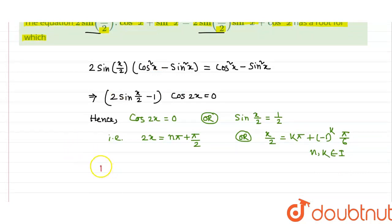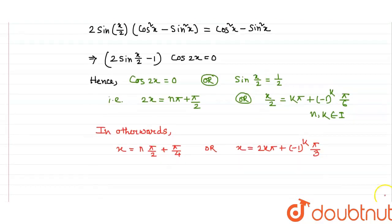In other words, x equals nπ/2 plus π/4, or x equals 2kπ plus (-1)^k times π/3.